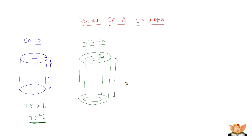How are we going to find the volume of this cylinder? The volume of the hollow cylinder is the quantity of space occupied by the hollow cylinder. It does not occupy any space in the middle. So what we have to do is find the volume of the bigger cylinder, find the volume of the smaller cylinder, and subtract the volume of the smaller cylinder from the bigger cylinder.